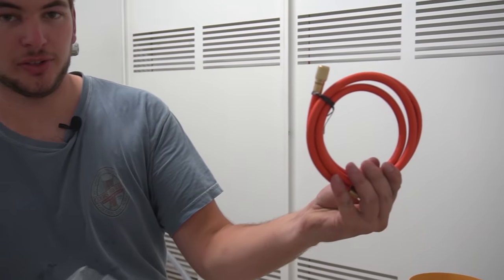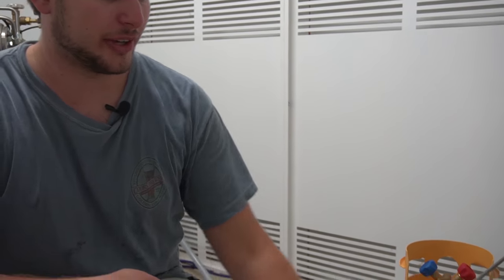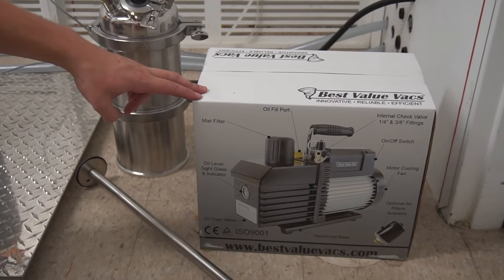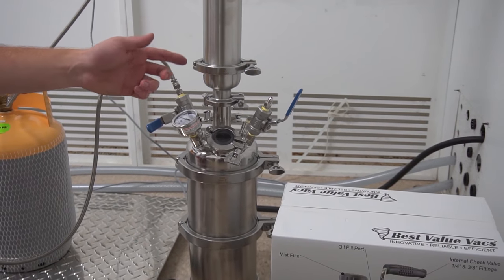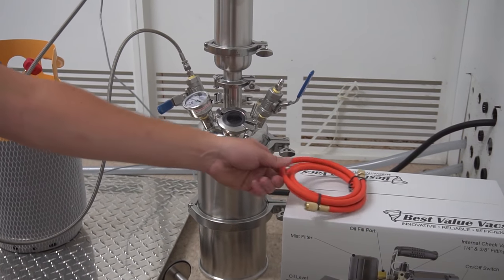And we have an HVAC hose. This is going to go with our vacuum pump over here. We're going to use this to pull a vacuum on the entire extractor after it's packed up with material.